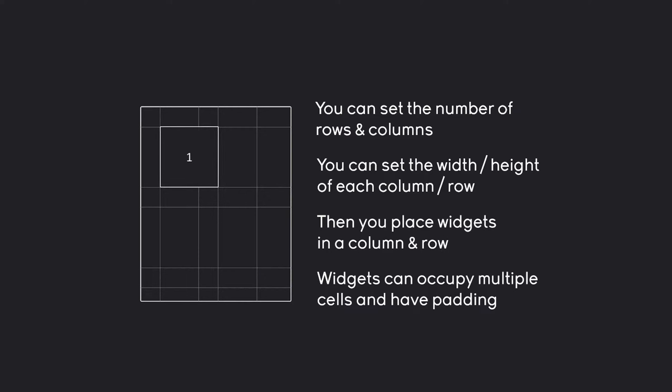On top of that, you can also specify how many cells a widget is going to occupy. For example, this could look like this, or like this, where you have one widget overlapping with another widget. In the most basic sense, this is a very simple system.